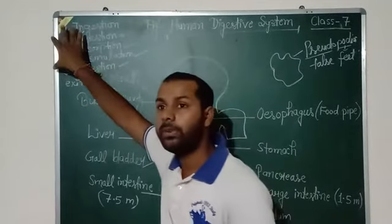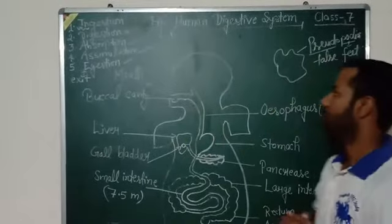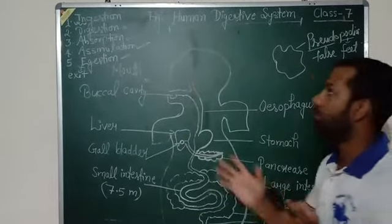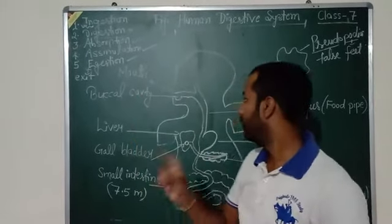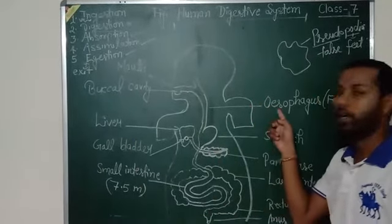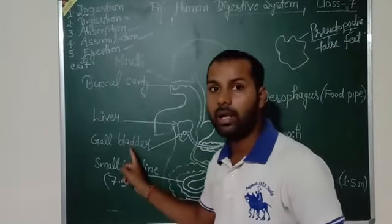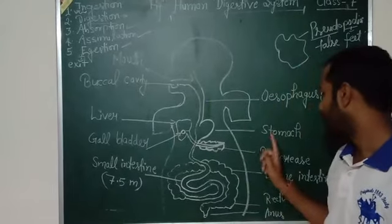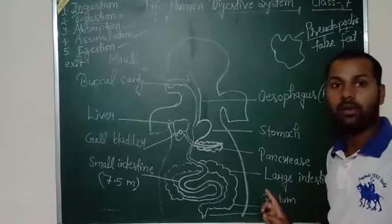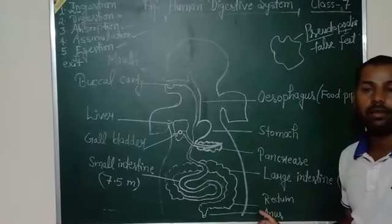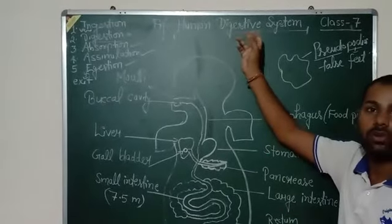So these five steps happen in the human digestive system. Now let's see which organs are present in the human digestive system: mouth and buccal cavity, oesophagus or food pipe, liver, gallbladder, stomach, pancreas, small intestine, large intestine, rectum, and anus. These organs participate in the human digestive system.